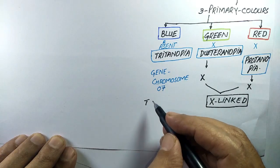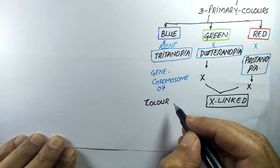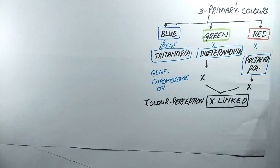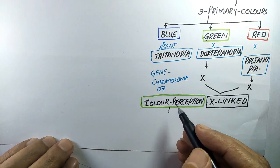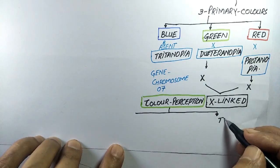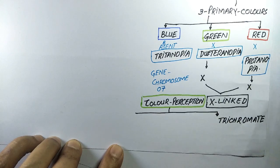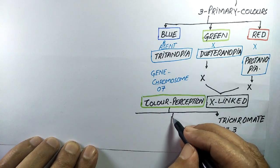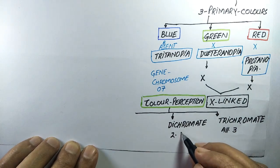As far as color perception is concerned, individuals are classified into three groups. They may be trichromates, who can perceive all three primary colors with normal vision; dichromates, who can perceive only two out of three primary colors; or monochromates, who can perceive only one out of three primary colors.